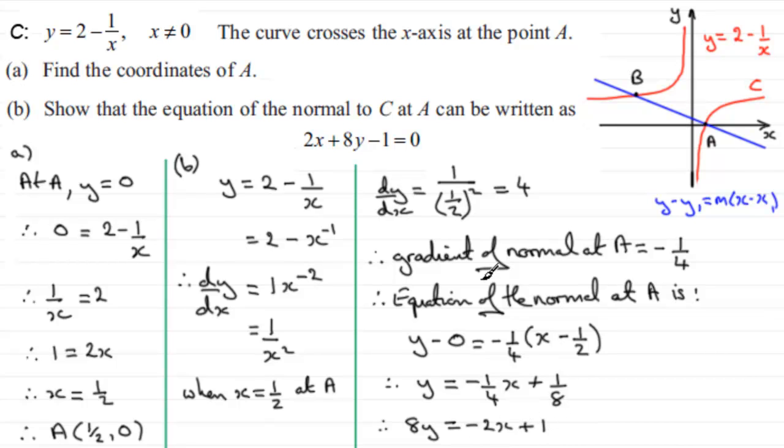You should be able to see that this is now starting to look very similar to this. All I've got to do is just rearrange this. That is, add 2x to both sides and subtract 1 from both sides. So, it follows that if I do that, I end up with 2x plus 8y minus 1 equals 0. The equation, then, of the normal at A.